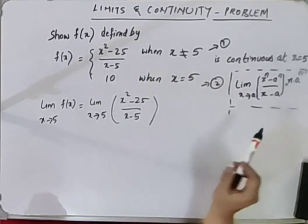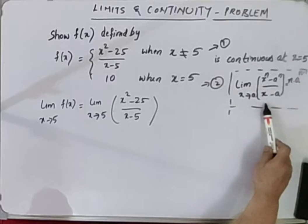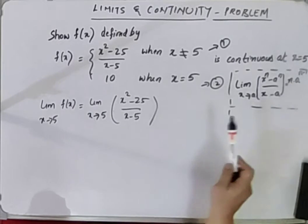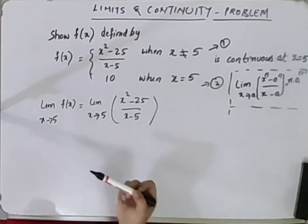This is of the format x to the power of n minus a to the power of n by x minus a. Let's use this theorem here.